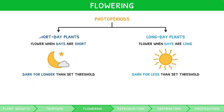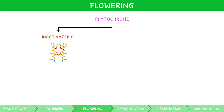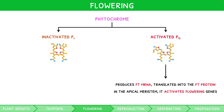Light is absorbed by a pigment known as phytochrome. It exists in two forms: inactivated PR and activated PFR. Activated PFR triggers transcription of FT mRNA, which is transported to the apical meristem and translated to form FT protein. This protein in turn activates genes responsible for flowering. Therefore, a careful balance exists between these forms of phytochrome, which is responsible for the regulation of flowering.